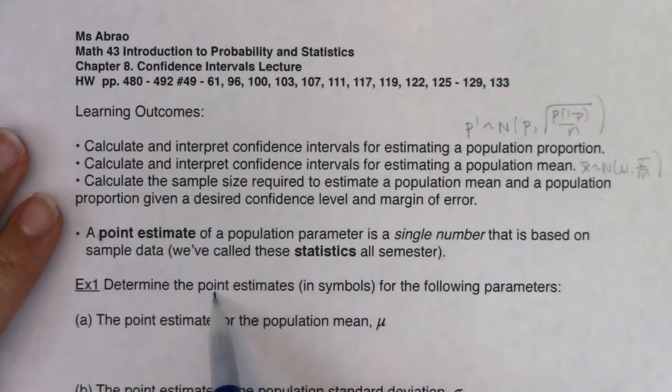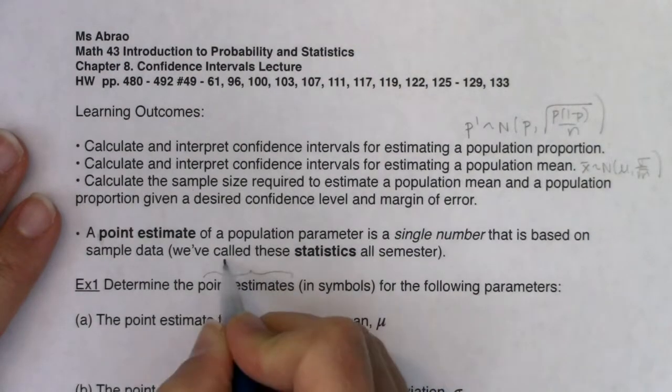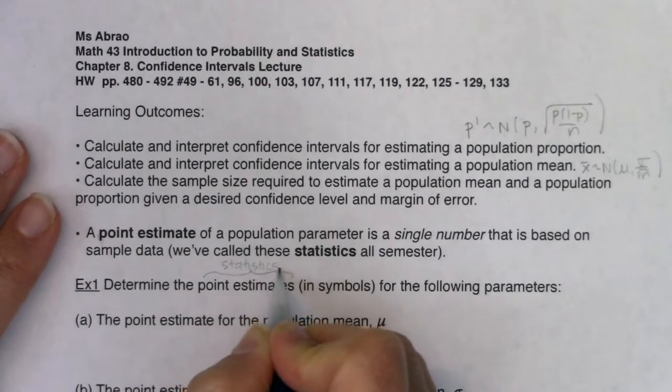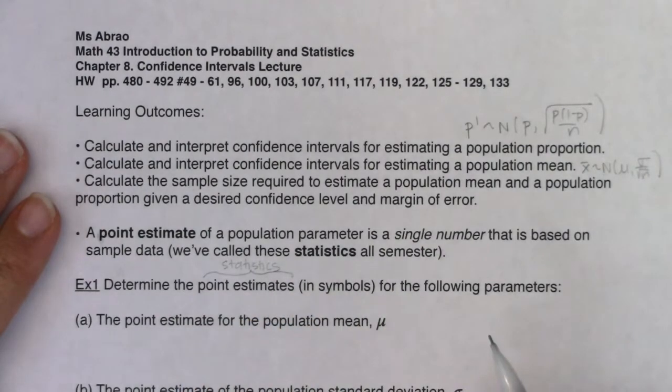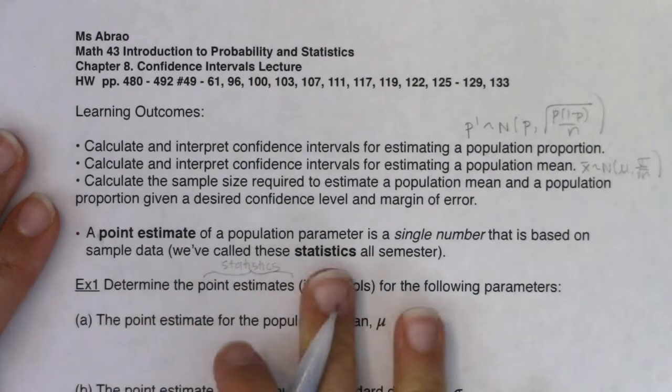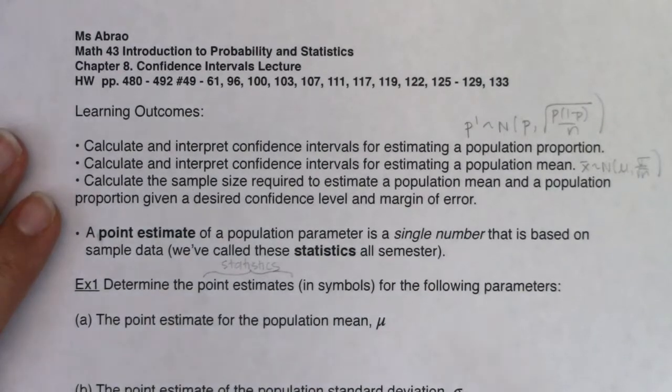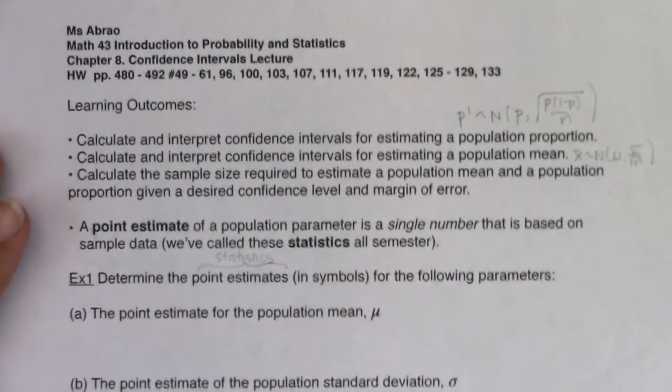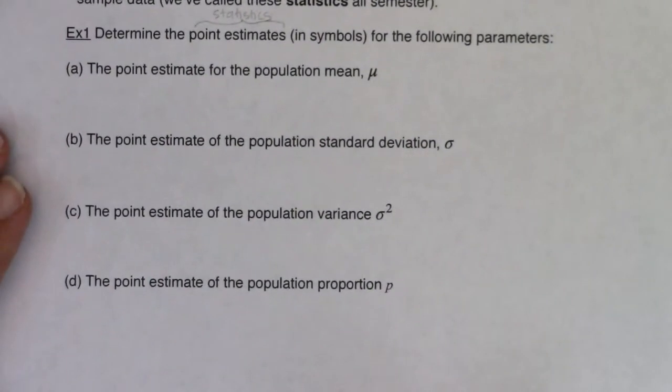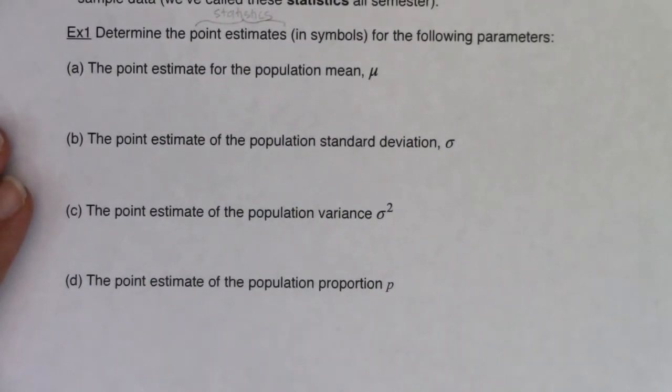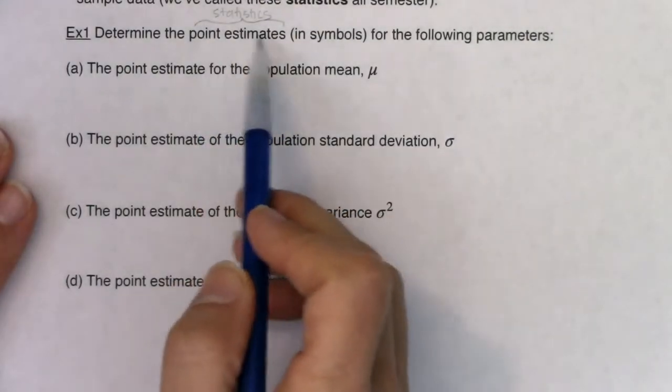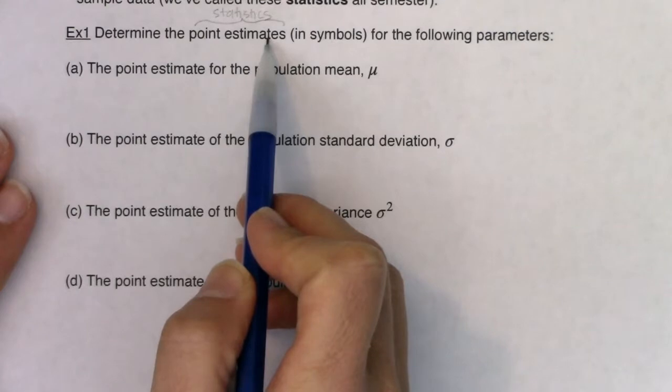It says determine the point estimates. This is a different vocab term for get me the statistics. I want to work on their symbols, their notation, so that we have the same notation as we move forward. Get me the stats and symbols for the following parameters. Anytime you hear point estimate, that's a new vocab term for statistic.